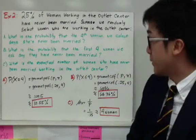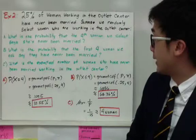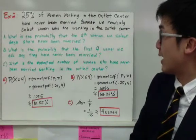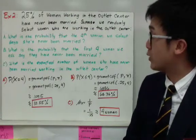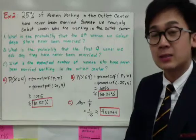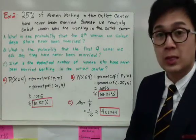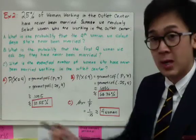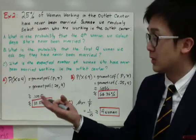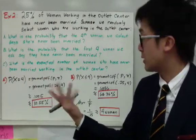For letter B, what is the probability that the first four women we ask say they have never been married? To illustrate letter B, for example, you ask workers in the outlet center, the first one you ask says she's never been married, the second says she's never been married too, the third has the same answer, the fourth, same answer as well. What is the probability that this situation will happen?